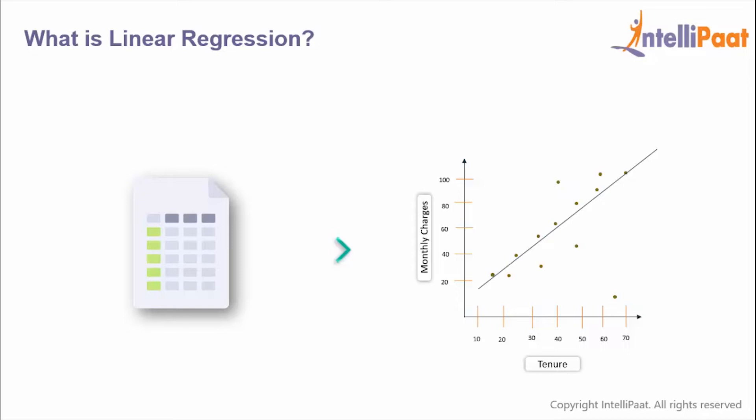So as the tenure of the customer increases, his monthly charges would also increase. Now the best fit line helps the delivery manager find out interesting insights on the data. With this, he can predict the values of Y for every new value of X.